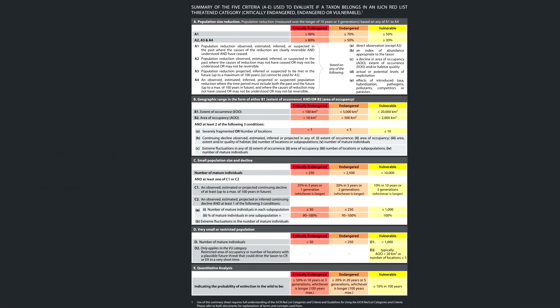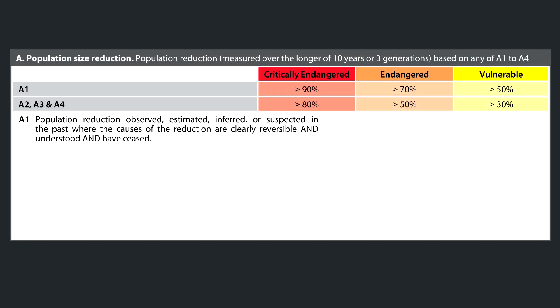Let's work our way through the five criteria that determine whether a plant or animal is endangered. If any one of these five criteria is true, then we're talking about an endangered species. First off, we have Criteria A: population size reduction. This is a population reduction measured over the longer of 10 years or three generations, based on any of A1 to A4.